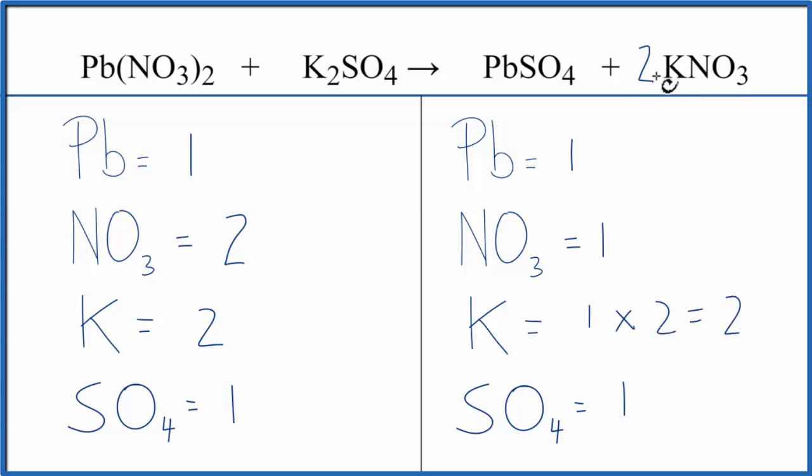That'll balance the potassiums, but the two applies to everything, so we have the one nitrate times the two, and we have two of those, and this equation is balanced. That's it. We're done.